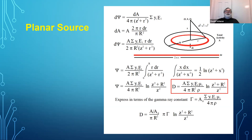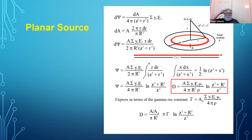A practical application for the disk source formula: suppose a dirty bomb disperses a radioactive source over a certain area. You can use this formula to calculate the dose rate to people walking in that area — a flat plane covered with radioactive material. It's not a calculation done often in practice, but it's important to be aware this formula exists.